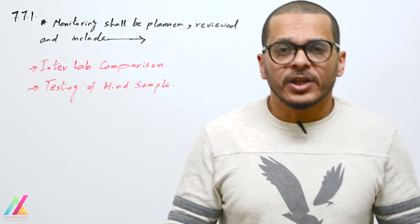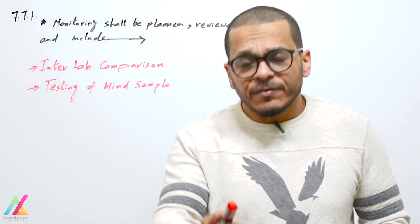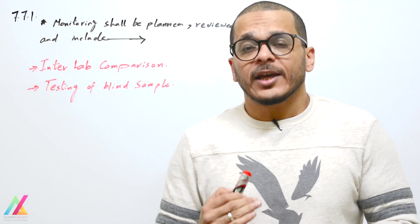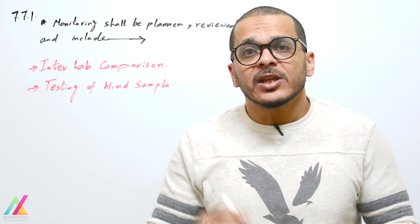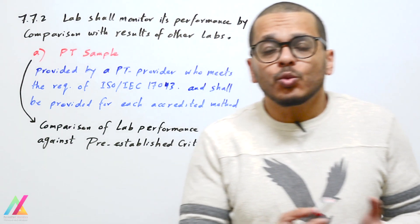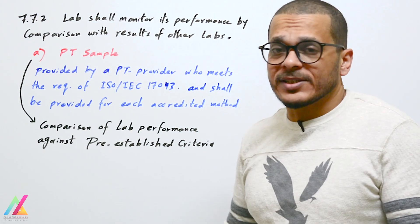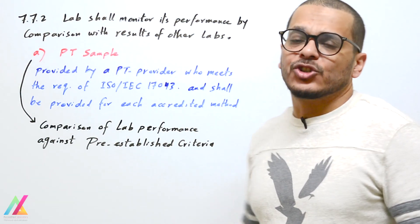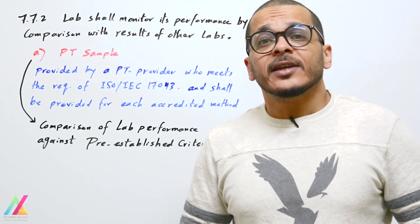These are examples of quality control activities that can be followed in the lab. If a reference method is used, all QC activities and verifications attached to that method should be followed. The lab shall also monitor its performance by comparison with results from other laboratories — this is done through PT samples, which are very important for comparing lab performance against pre-established criteria.